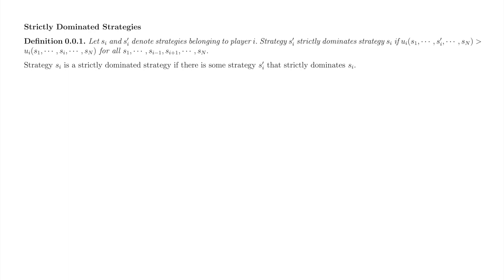A strategy SI' strictly dominates a strategy SI if player I's payoff from SI' is strictly greater than player I's payoff from SI for every strategy profile involving SI' and SI. Another way to think about this idea is to say that SI' strictly dominates SI if player I knows her payoff from SI' is strictly greater than her payoff from SI before player I learns the other player's respective strategy choices.